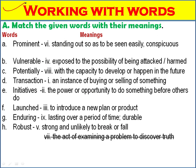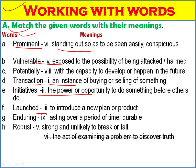Working with words: match the given words with their meanings. Prominent: standing out so as to be seen easily, conspicuous. Vulnerable: exposed to the possibility of being attacked. Potentially: the capacity to develop or happen in the future. Transactions: an instance of buying or selling something. Initiatives: the power or opportunity to do something before others; to introduce a plan or product. Enduring: lasting over a period of time, durable. Robust: strong, unlikely to break or fail.